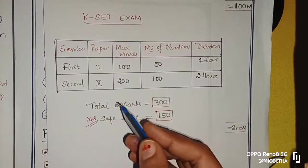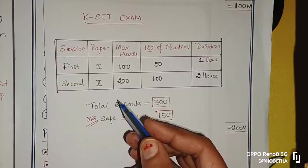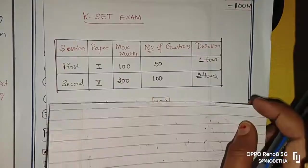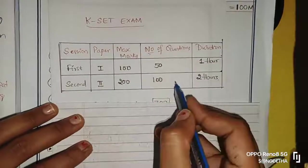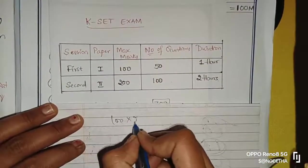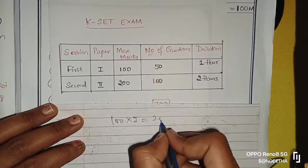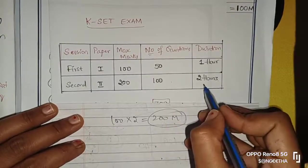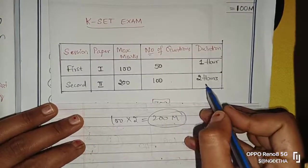Coming to Paper 2, it has 100 questions, each carrying 2 marks, so 200 marks. And the time is 2 hours.